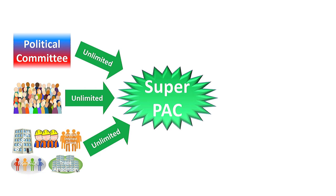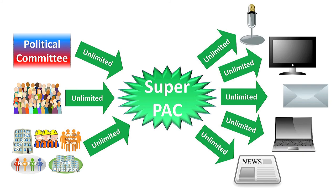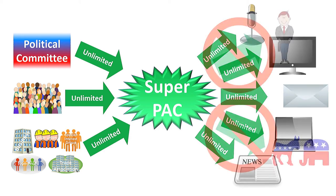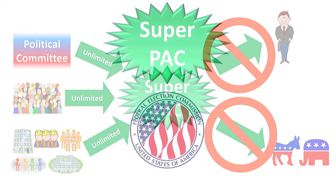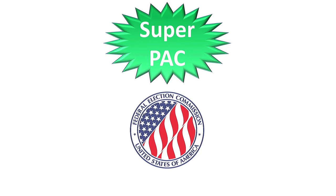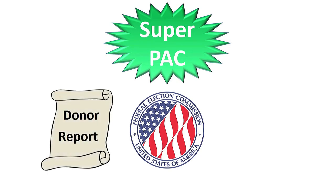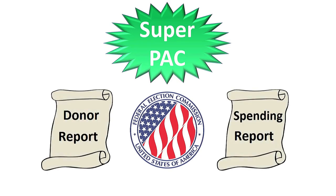Super PACs can spend an unlimited amount on advertisements, mailings, or other activities to support or oppose a candidate or issue. But they cannot contribute to or coordinate with a candidate committee or party committee. Super PACs must register with the Federal Election Commission and report the names of their donors and account for their spending on a quarterly or monthly basis.